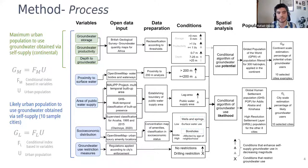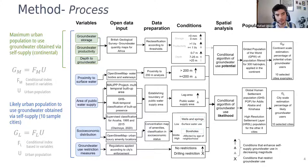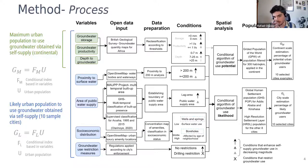Those are basically the two measures we calculated. All of the input data was spatially distributed open data. This was all prepared in a GIS environment, where we used conditional algorithms to evaluate how these things interacted.